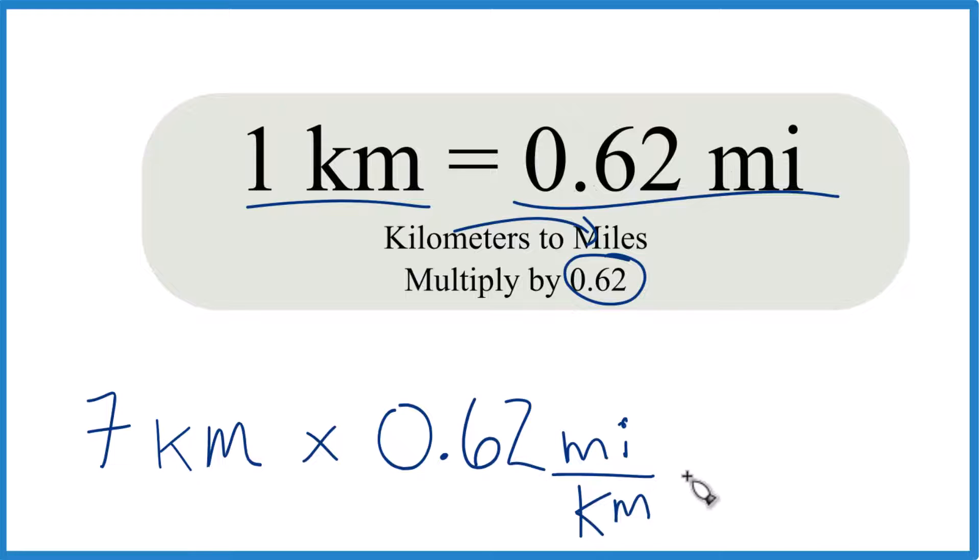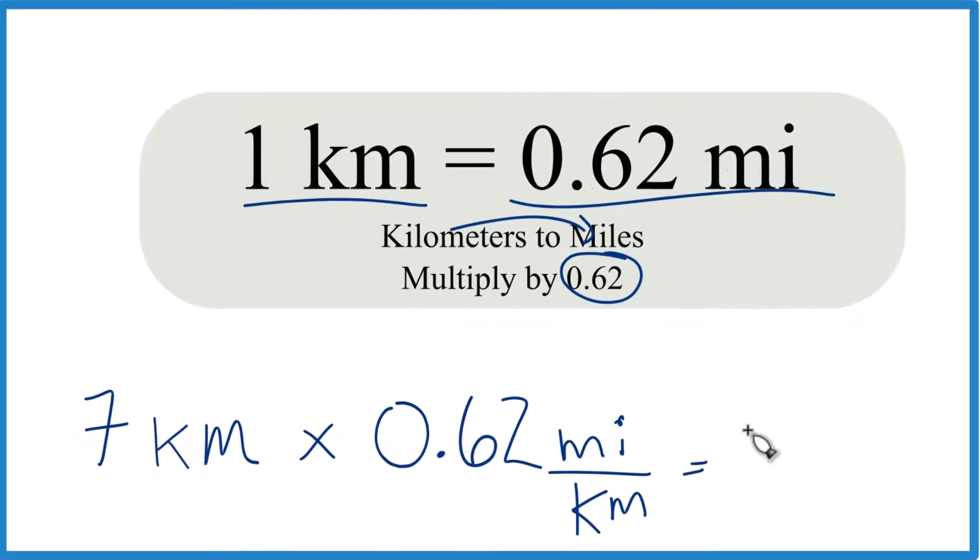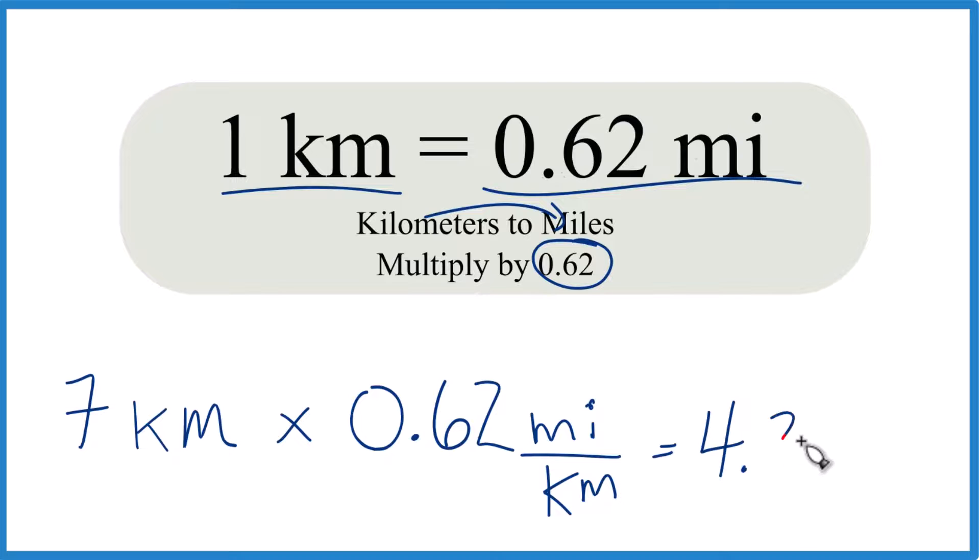So now we multiply seven times 0.62, we end up with 4.34, and because we have kilometers on the top and the bottom, we can cancel those out, left with miles. That's what we're looking for.